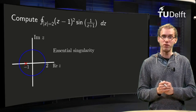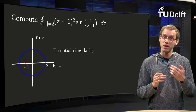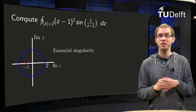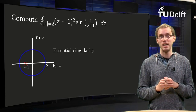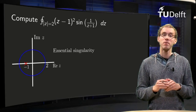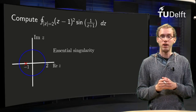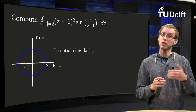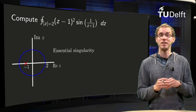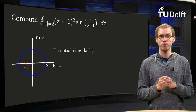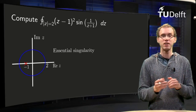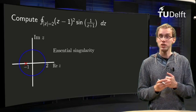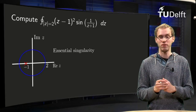In this example we have the function f(z) = sin(1/(z+1)) times (z-1)², which gives us an essential singularity at z = -1. Our contour is a circle of radius 2, which means our essential singularity at z = -1 is inside our contour. The function is analytic everywhere else, so we have only one point where the function is not analytic, and that is z = -1.